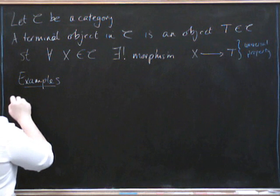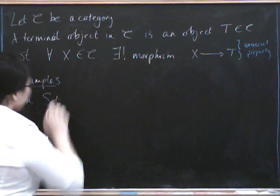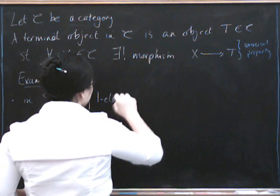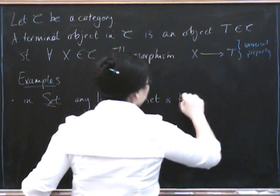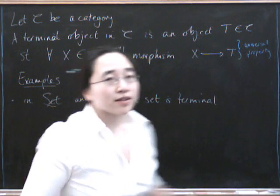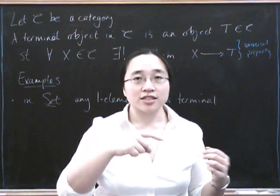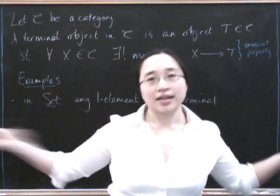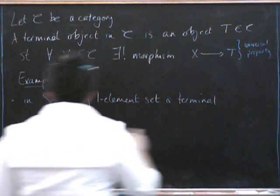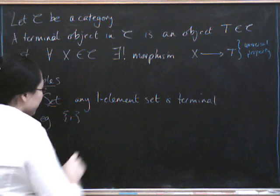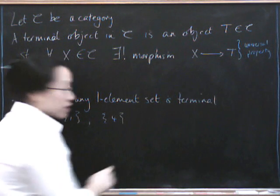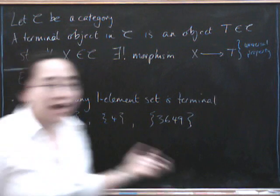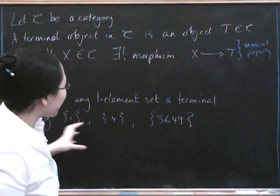In the category of sets, any one element set is terminal. Because if you have a set with one element, then there can only be one morphism, one function from any other set to it. And there is precisely one function. Because you just send every element of this set to the unique element of this set. And that's the only thing your function could possibly do. So for example, the set containing 1 is terminal. But also the set containing 4 is terminal. And also the set containing 3649 is also terminal. It doesn't matter what your element in there is. As long as there's precisely one element, then it's terminal.